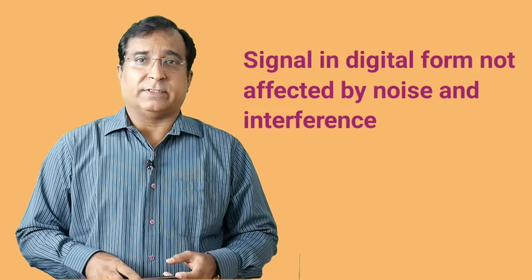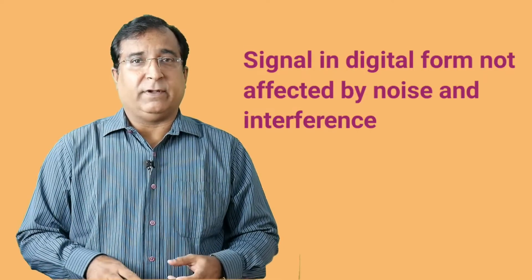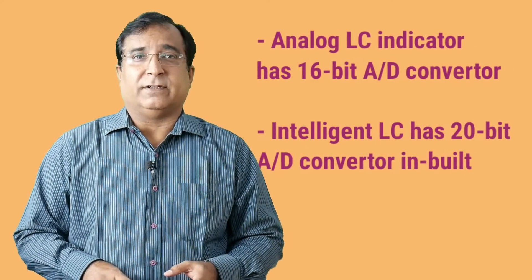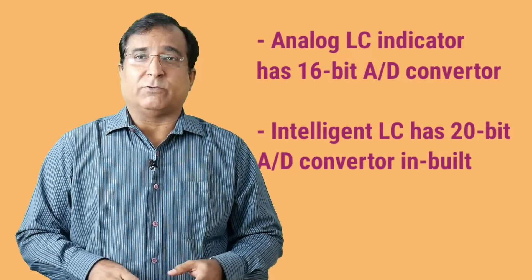As the output signal from the load cell is in digital form, then there is no problem of interference, transient noise in long transmission cable is also eliminated. Typical analog load cell indicator has a 16-bit analog to digital converter by which you get only 50,000 counts or steps.